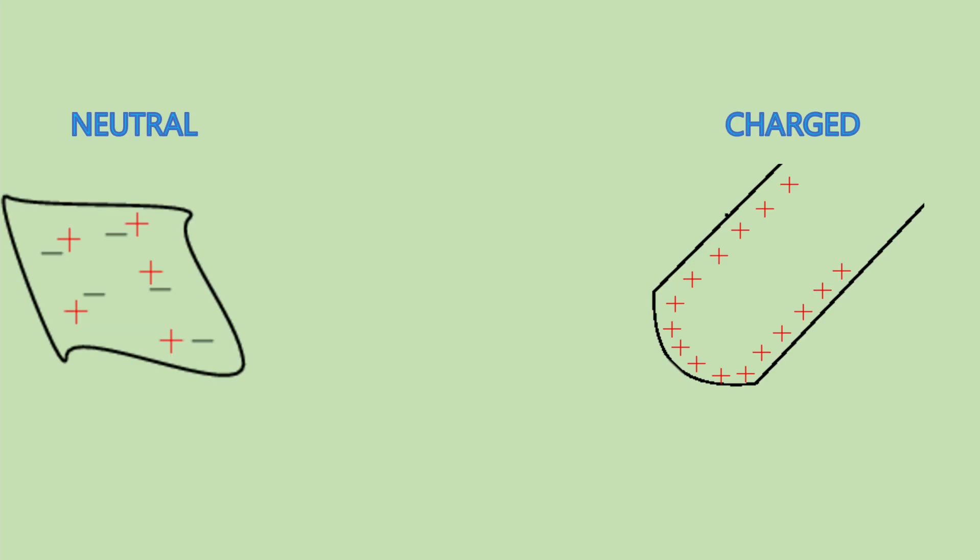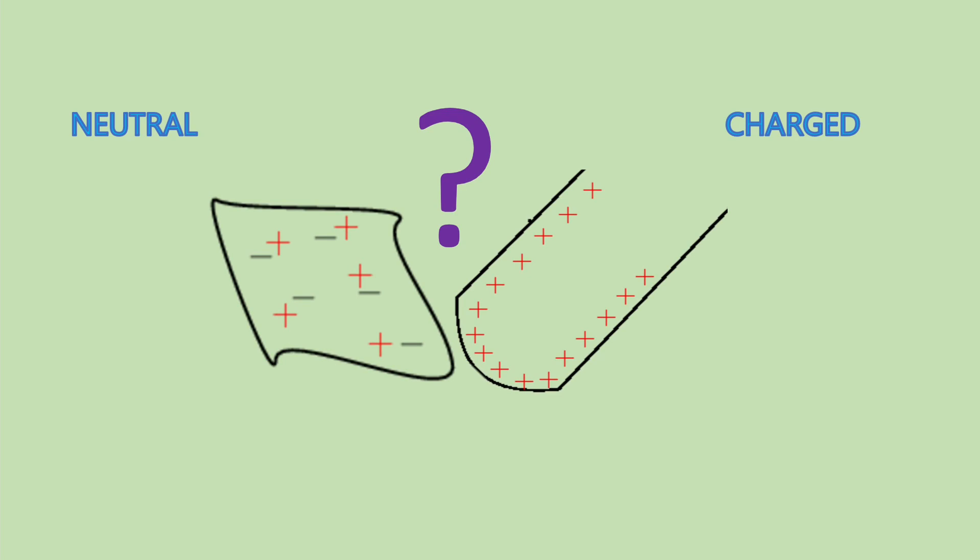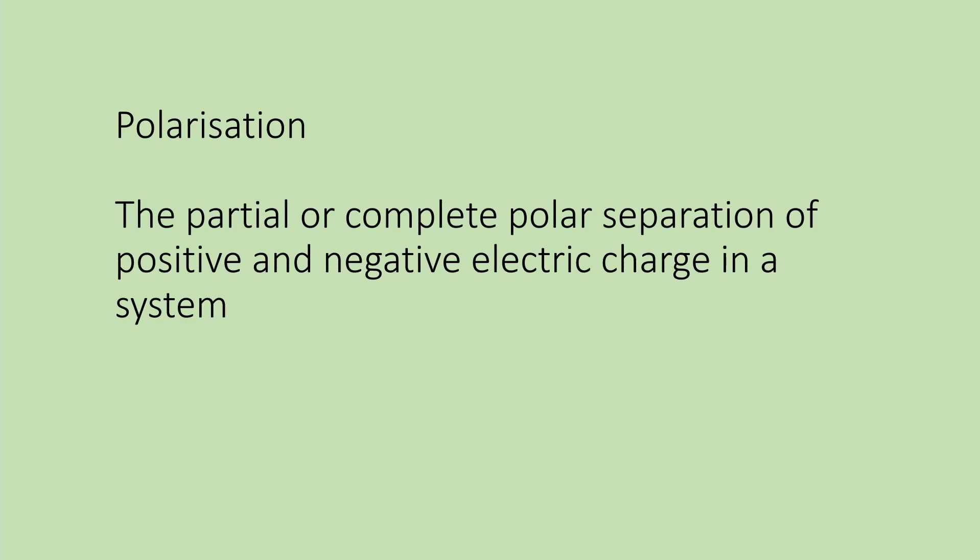But what do you think will take place if a neutral object and a charged object are brought closer to each other without making any contact? Polarization will come into play. Polarization is the partial or complete polar separation of positive and negative electric charge in a system. Let's take a deeper look into this concept.